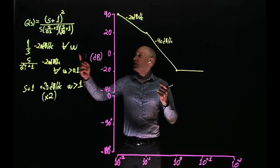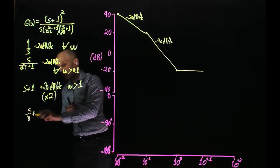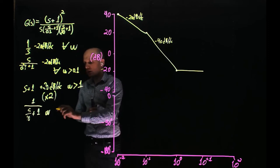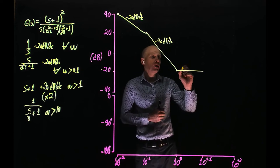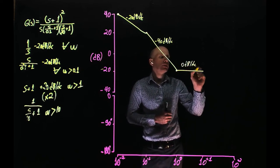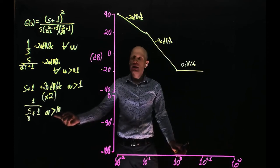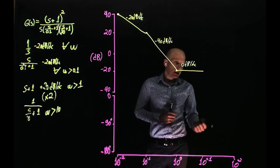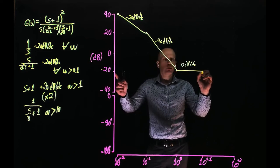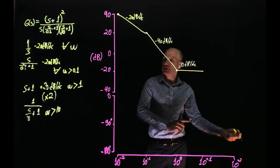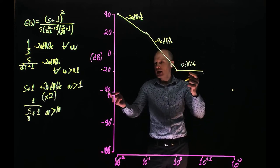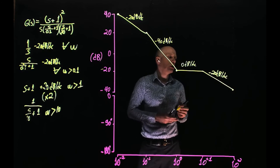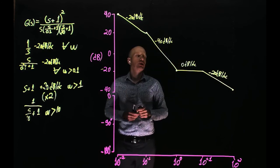The next cutoff frequency is the pole at s/10 + 1, which adds negative 20 dB per decade as soon as the frequency is greater than 10 radians per second. The slope here is zero dB per decade. Passing that cutoff frequency at 10, the pole adds negative 20 dB per decade, and the Bode plot will again go down by 20 dB per decade. At 10 radians per second the magnitude is negative 20 dB, so at 100 we go down by 20 more to negative 40 dB. This is the gain of function G(s) as a function of frequency.